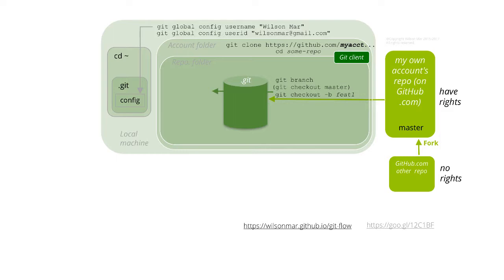Now we can edit the file named readme.md. The .md designates markdown format. GitHub creates such a file with this specific name to describe each repository. We can use vim or another text editor, such as nano or others, to change the contents inside files.